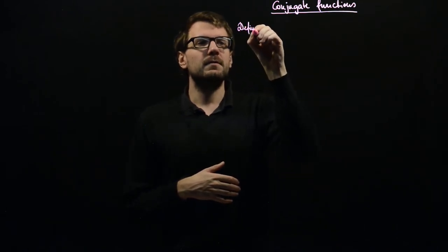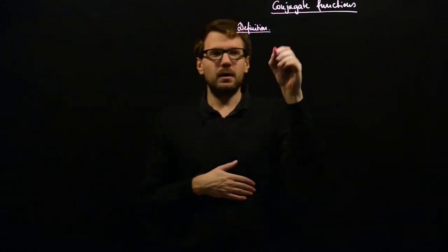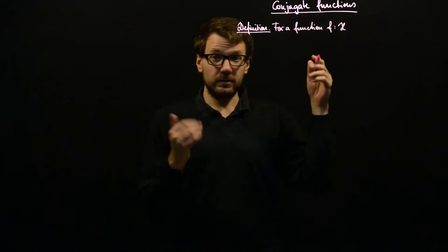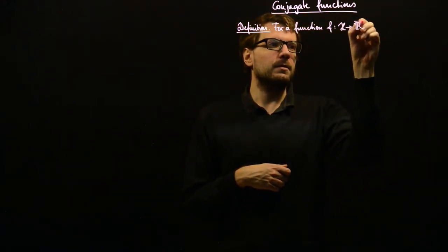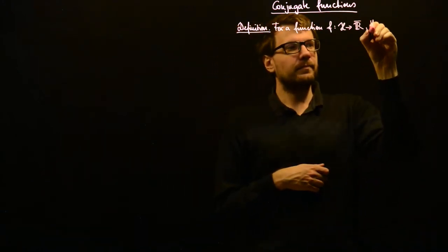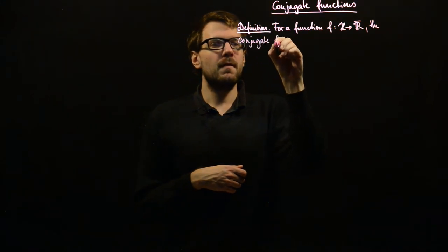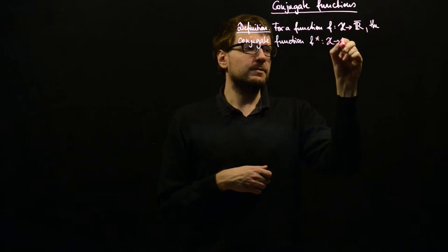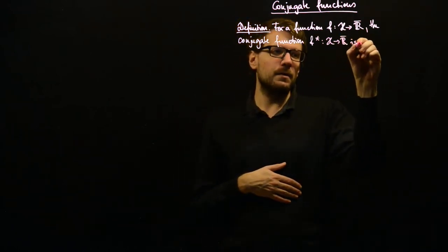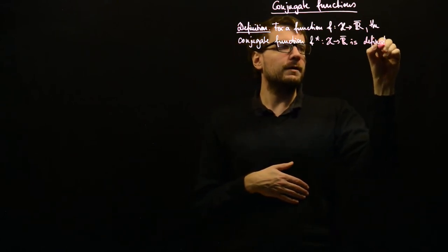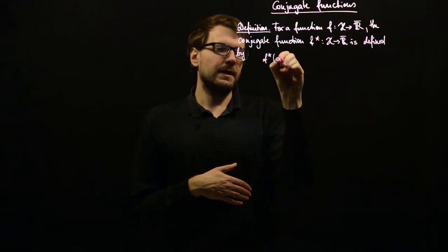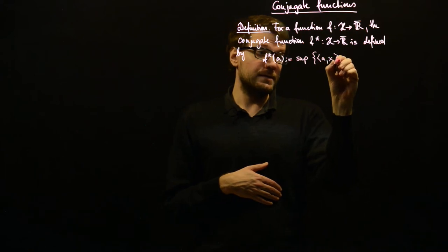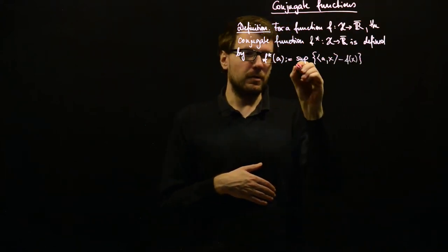Let's give the definition. For a function f going from our usual finite-dimensional inner product space to the extended real line, the conjugate function — denoted f star — also maps from H to the extended reals, and is defined by: f star of a is the supremum over x in H of the inner product of a with x minus f of x.